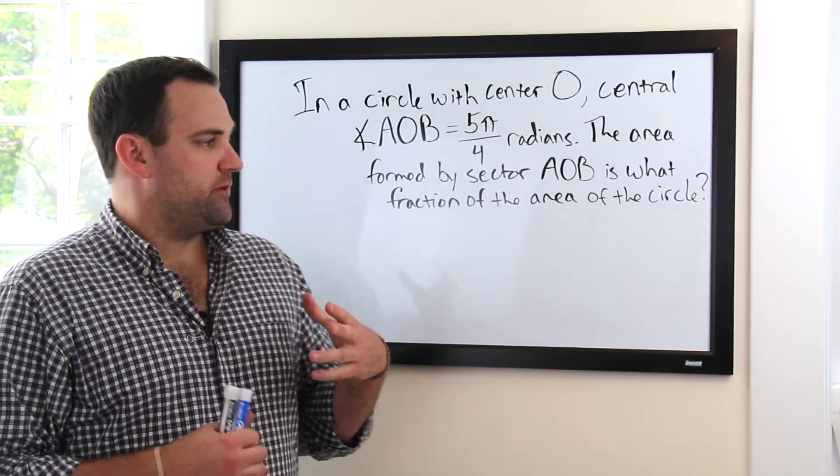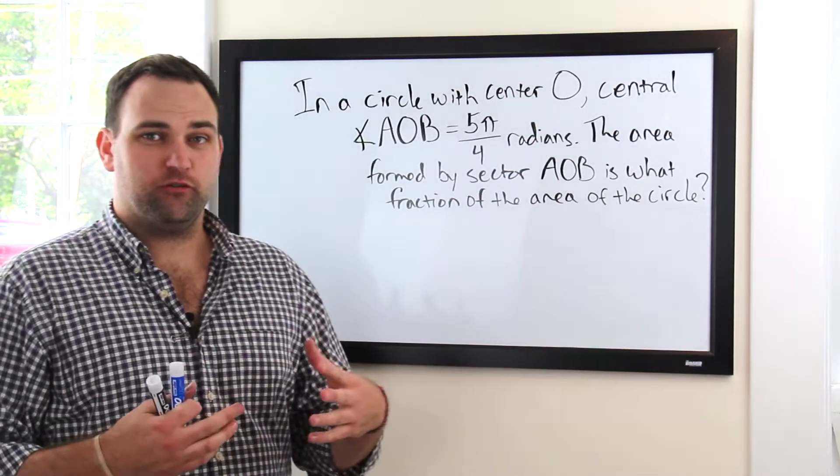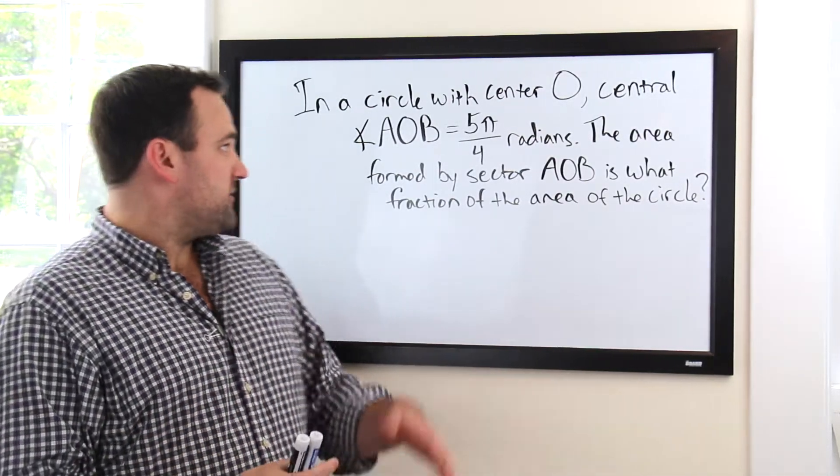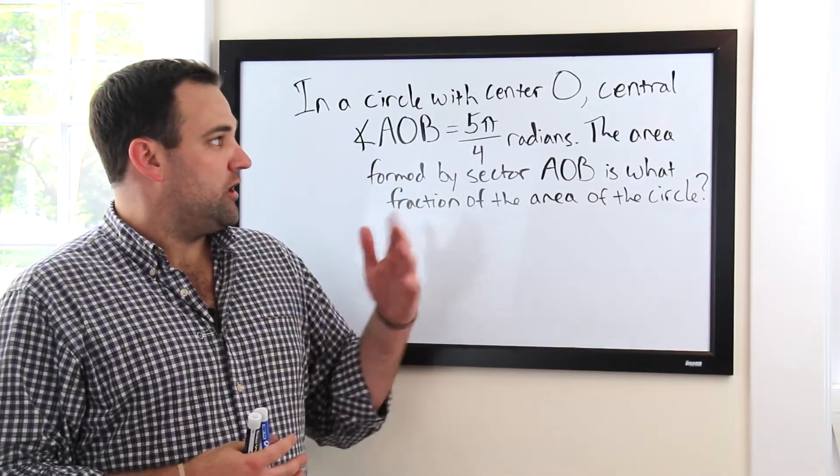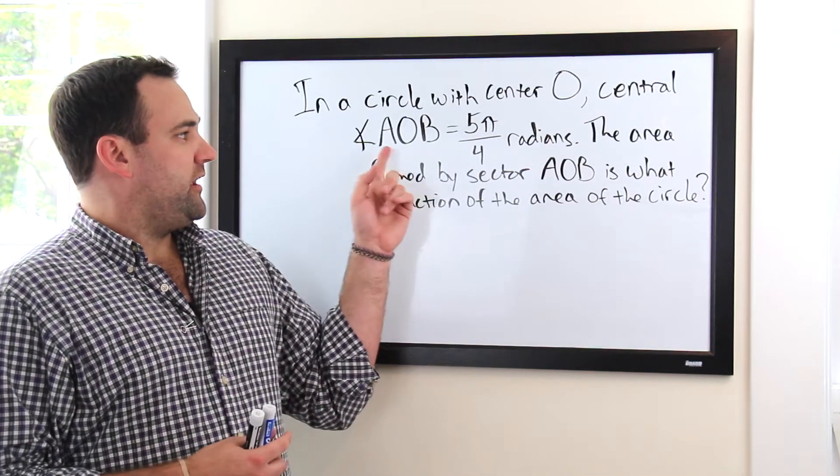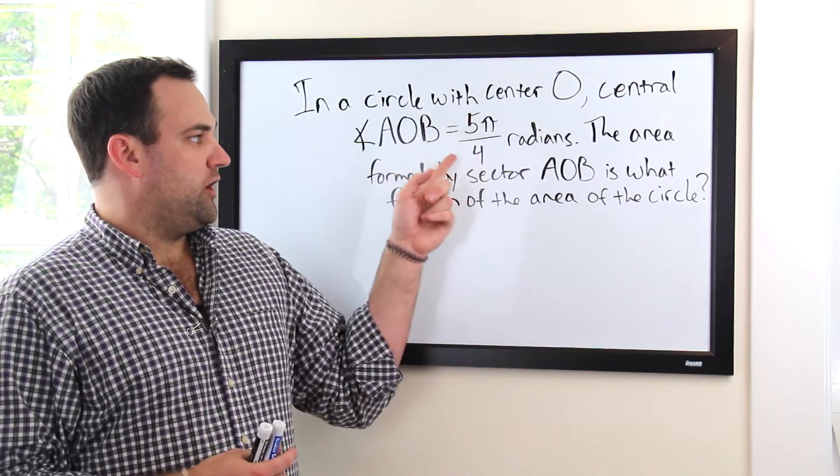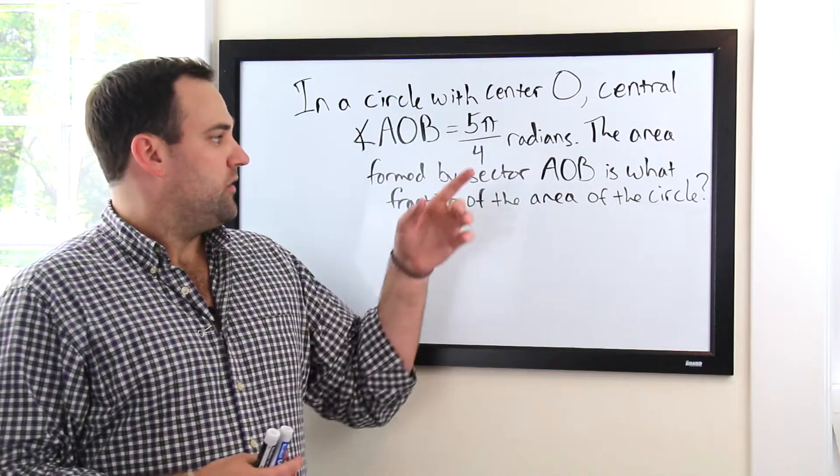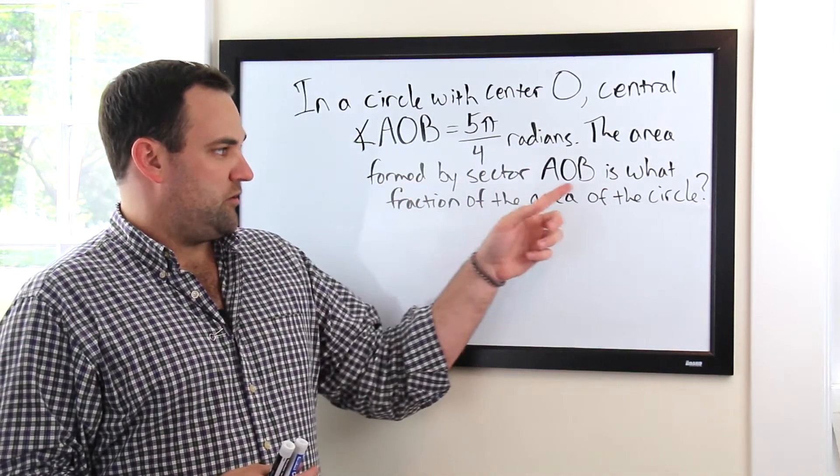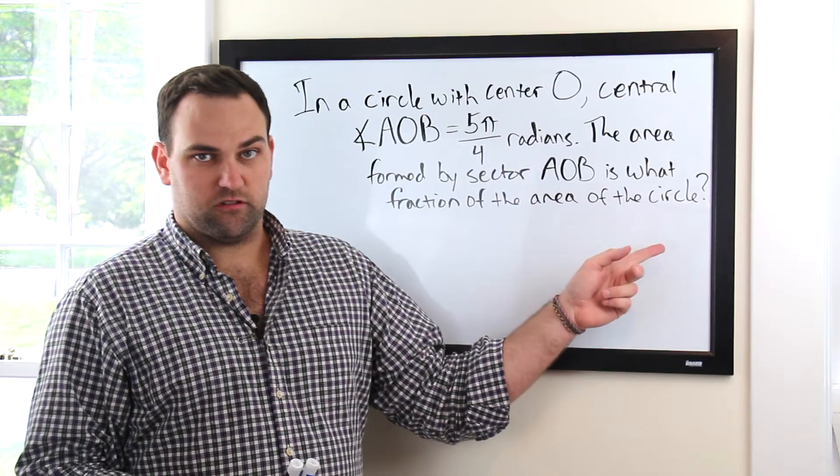Alright guys, so here's a question from the new SAT math section. This is going to be one of your grid-in questions, one of the last ones on the test. It says, in a circle with center O, central angle AOB is equal to 5π over 4 radians. The area formed by sector AOB is what fraction of the area of the circle.